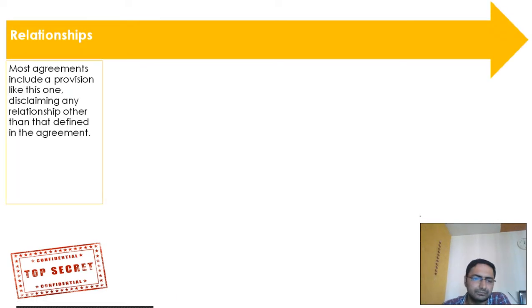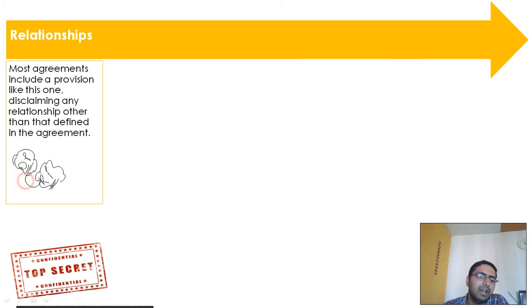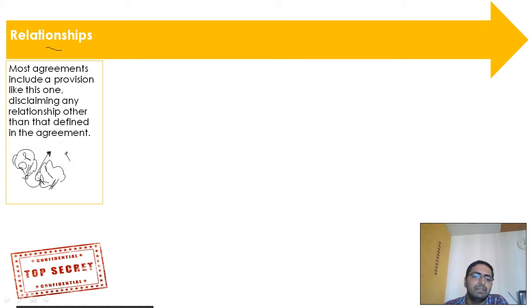The next clause is relationship. The disclosing party and the receiving party are different individuals or different companies who came together for this specific purpose. This clause clarifies that the relationship between the two parties is limited to this NDA only — they don't have any broader relationship beyond it. This defines the limitation of their relationship.